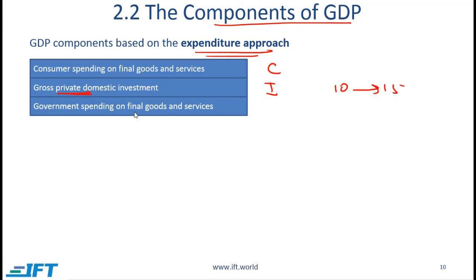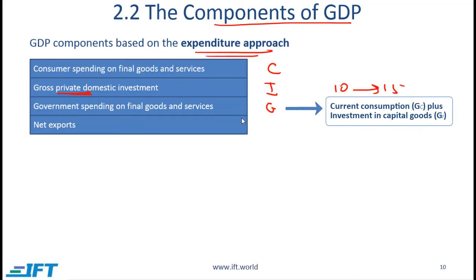Government spending on final goods and services is denoted by G, and net exports represent our external sector — you can think of net exports as the expenditure by foreigners. This is denoted by X for exports minus M for imports. If exports equal 100 and imports equal 60, then the net exports number, or the net expenditure by foreigners, is 40.